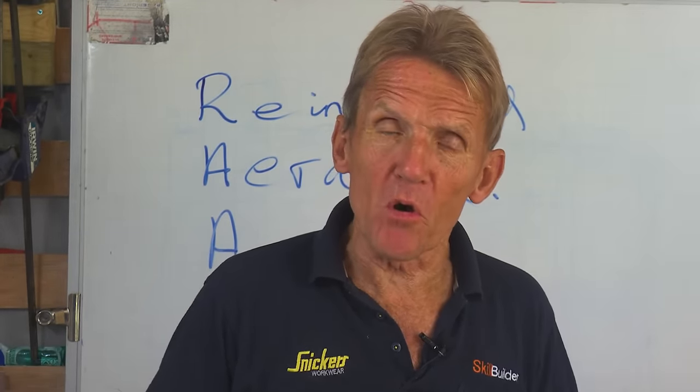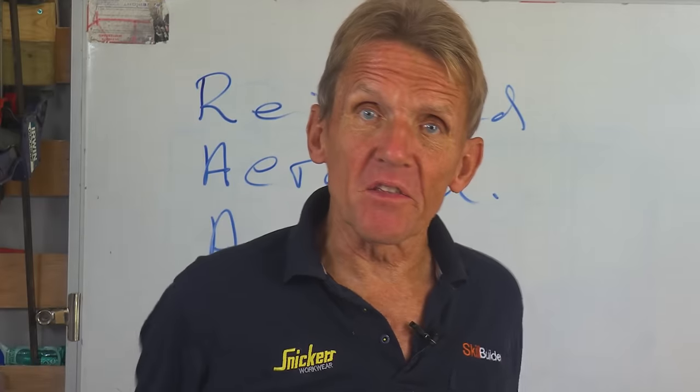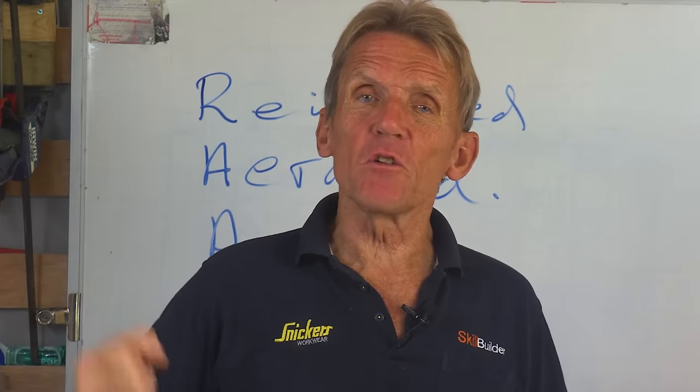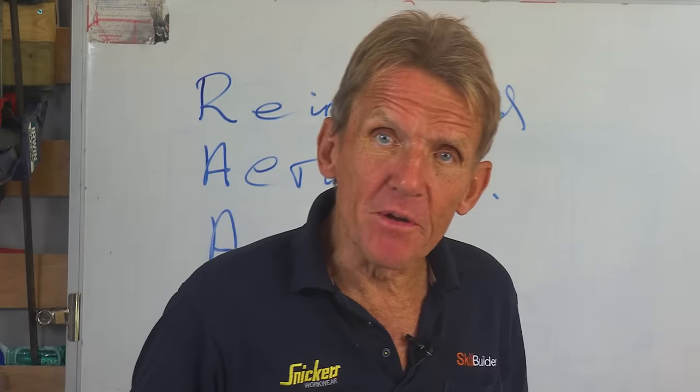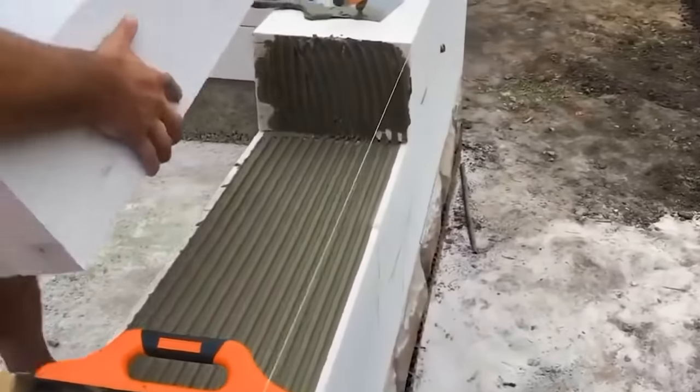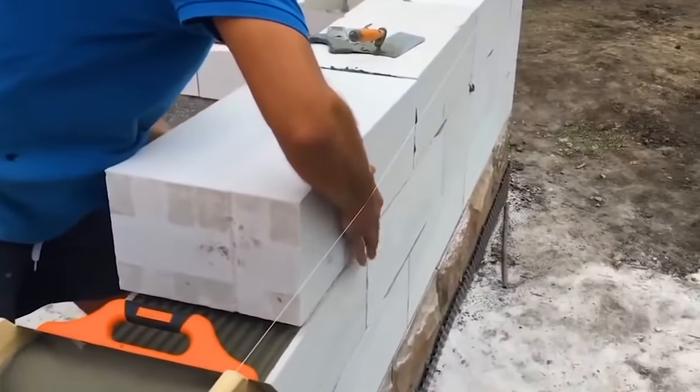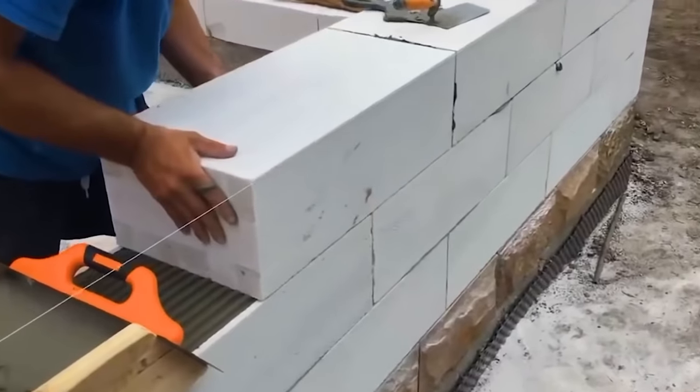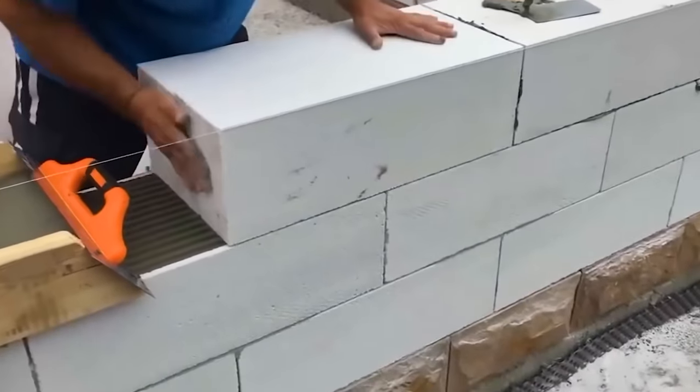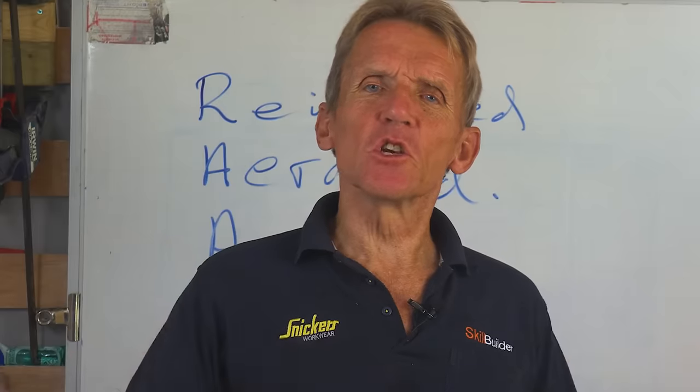If you want a lighter weight block with more insulation value, like solar blocks, you put in more aluminum filings. If you want a stronger block, you may not put in any aluminum filings at all or you put in fewer. The idea is that you can vary the aeration and it's a very good thing in terms of insulation.